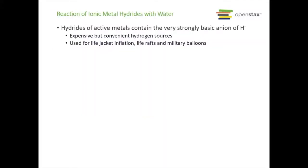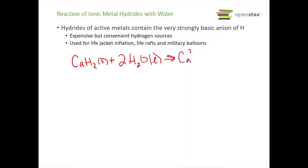Our next method is reacting ionic metal hydrides with water. We take a hydride of an active metal — these have the very basic anion H minus — and react it with water. This is a very expensive method, but very convenient as a source of hydrogen, and is actually used for things like life jacket inflations, life rafts, and military balloons. For instance, solid calcium hydride reacts with water to give aqueous calcium hydroxide and hydrogen gas, which inflates things.